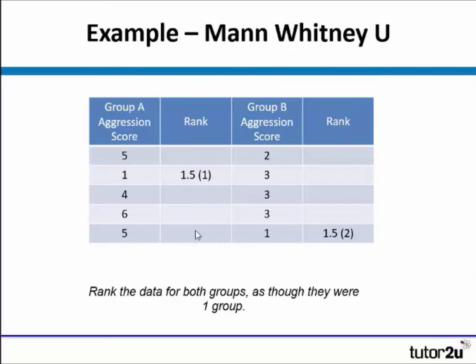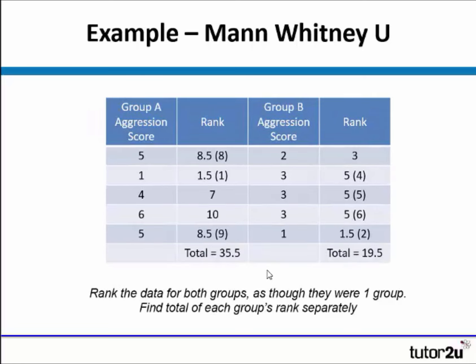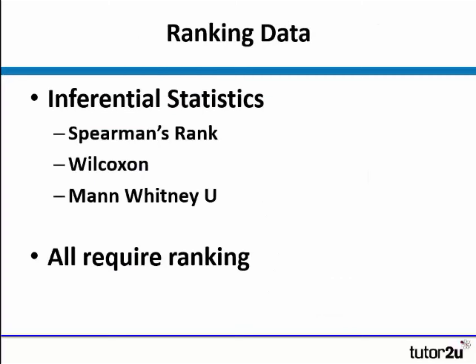For Mann-Whitney U, we have to rank the data as if they were one group. Unlike Spearman's rank, where we keep the groups separate, all scores have to be ranked together. So here we have two scores of one, again taking positions one and two, so they both take rank 1.5. There's only one score of two, so that takes rank three, and so on. Whenever you have scores which are the same and you're ranking, you need to find the middle rank to make sure they have an equal score.